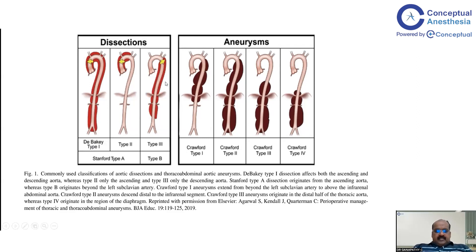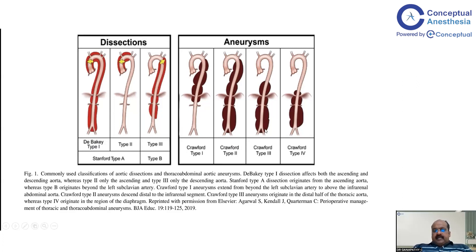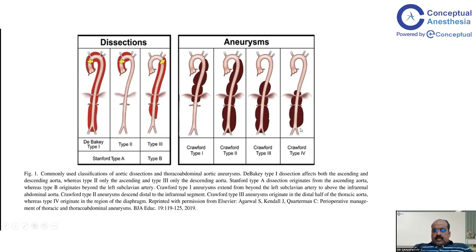Stanford type B or DeBakey type 3 aneurysms can be managed conservatively initially and we can go for TVAR later. For aneurysms, there are four Crawford types. Crawford type 1 extends from the left subclavian artery to below the diaphragm above the renal artery branches. Type 2 extends from the left subclavian artery to the abdominal aortic branching. Type 3 extends from the lower third of the thoracic aorta to the iliac branching. Type 4 extends from the diaphragmatic area of the thoracoabdominal aorta to the iliac branching.